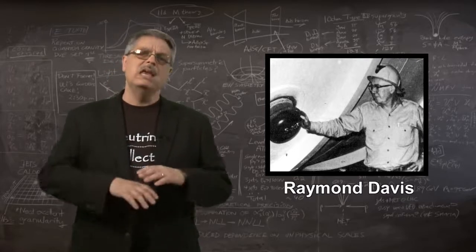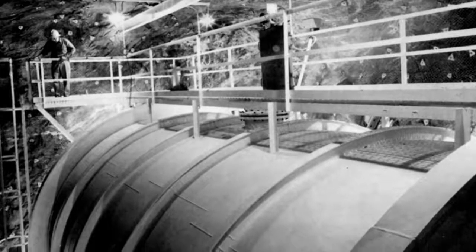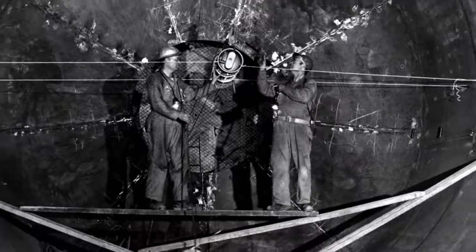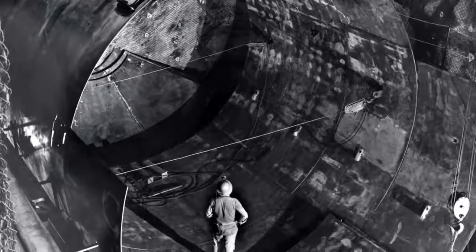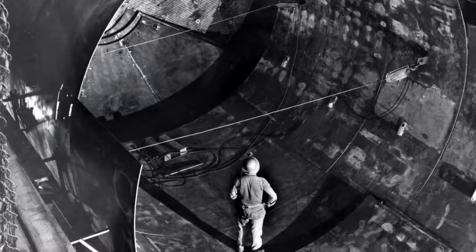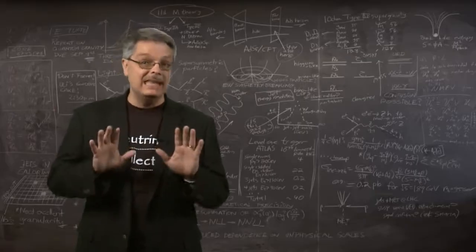So he took a huge vat of perchloroethylene, which is just a scientific name for dry cleaning fluid. The vat contained 100,000 gallons of liquid, about the size of an Olympic-sized swimming pool. He calculated that for every week of operation he could expect to create 10 atoms of argon.